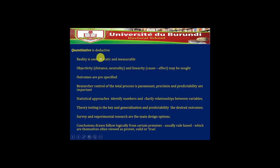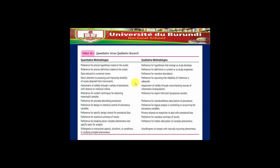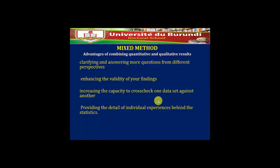Quantitative is deductive — it sees reality as measurable and it's objective. The researcher controls the process; statistical approaches identify numbers; it is theory-testing; conclusions drawn follow logically from certain premises. These are the major characteristics of quantitative and qualitative. I have a table here which gives you an expanded summary of what I've just said — find time to look at this table.